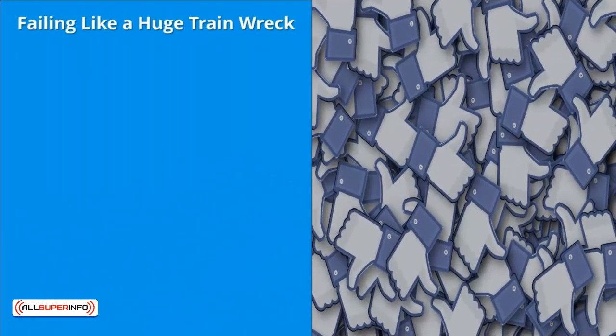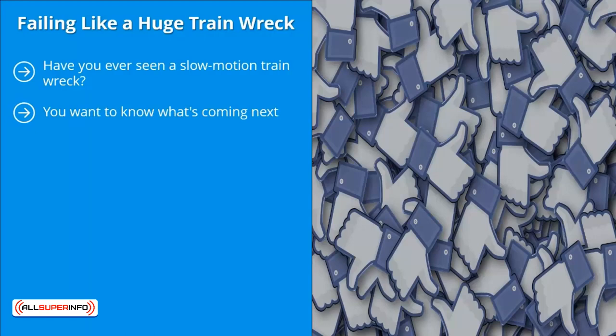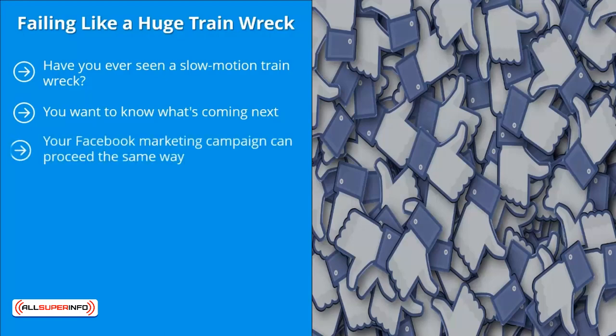Mistake ten: Failing like a huge train wreck. Have you ever seen a slow-motion train wreck? It's quite sad because it's all too predictable, but you can't look the other way — you want to know what's coming next. Your Facebook marketing campaign can proceed the same way. You know the campaign is failing, but you can't quite put your finger on the cause, so you just go through the motions like a deer caught in the headlights.